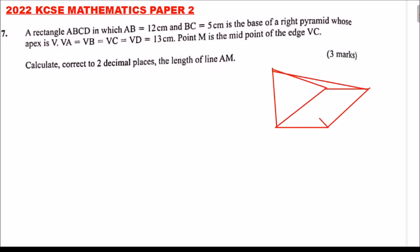So we have this figure. This is A, this is B, this is C, and this is D, and this is V. This is 5 cm and this is 12 cm, and the edges are 13 cm. Now we are told M is the midpoint, so M is there.